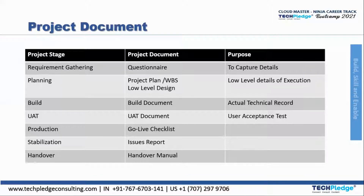When the planning stage comes into picture, a project plan or a work breakdown structure (WBS) is created. This is essentially a low-level design, and its purpose is to provide low-level details for execution.